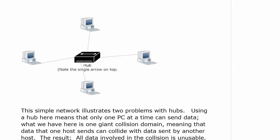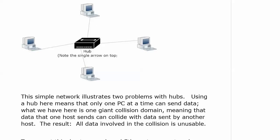Don't count on the fact that Cisco is going to tell you, because they might not. Now, this simple setup illustrates two problems with hubs. First off, using a hub here means that only one PC can send data at a time. And if that sounds like a bad idea in today's networks, you're right — it is a bad idea. It didn't always work great in yesterday's networks either, but it was certainly better than nothing. What we have here is one giant collision domain, and that means that the data one host sends can collide with data sent by another host.